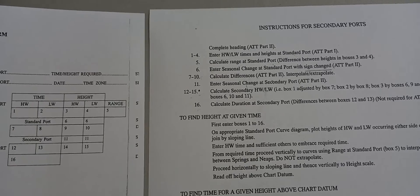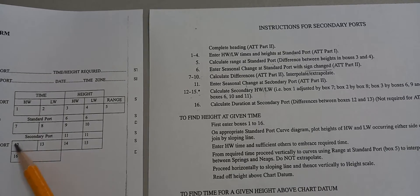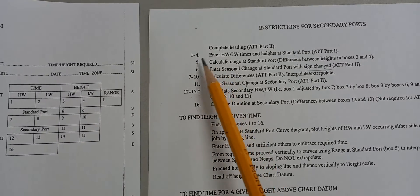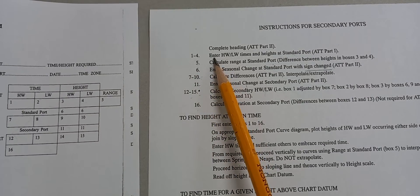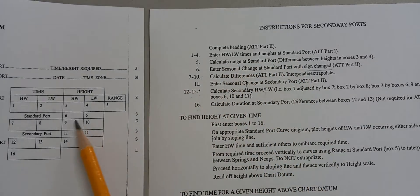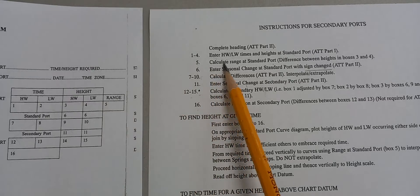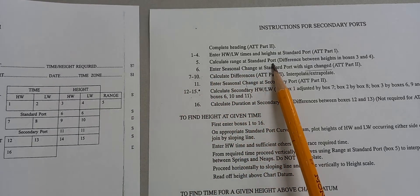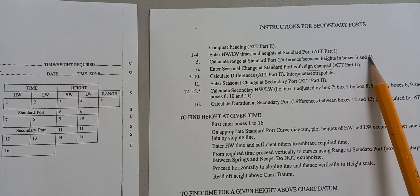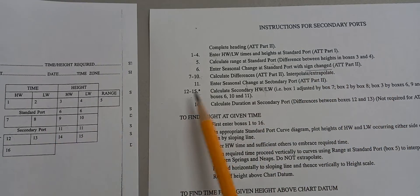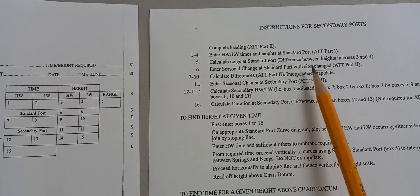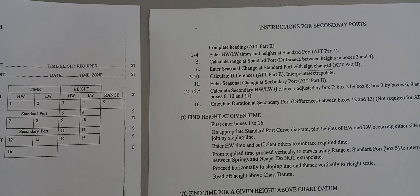In the tidal prediction form there are boxes numbered one to four. What we're going to do is enter the high water and low water times and heights. Then in box five we need to calculate the range at the standard port — that's the difference between the heights in boxes three and four. Next, box six requires us to enter the seasonal changes at standard port with sign change.